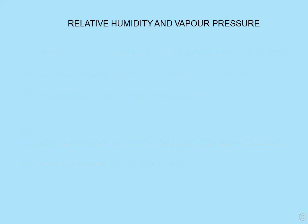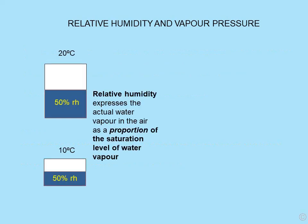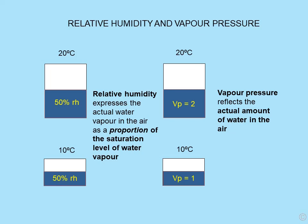Relative humidity and vapour pressure. On the left, relative humidity expresses the actual water vapour in the air as a proportion of the saturation level, and this can clearly be seen in the two diagrams to the left — 50% RH at 20 degrees and 50% RH at 10 degrees. However, if we deal with vapour pressure, that reflects the actual amount of water in the air. Using arbitrary units: at 20 degrees we have two units vapour pressure, and at 10 degrees, one unit vapour pressure.